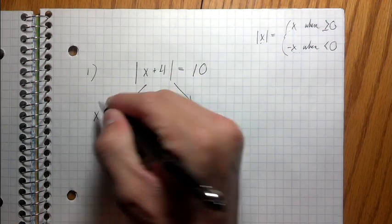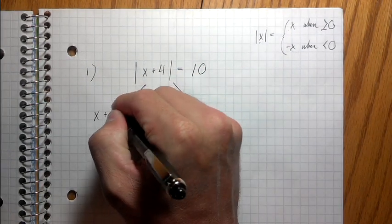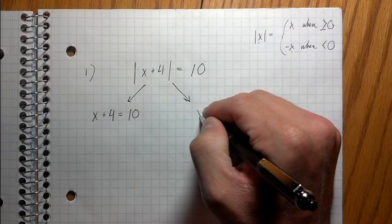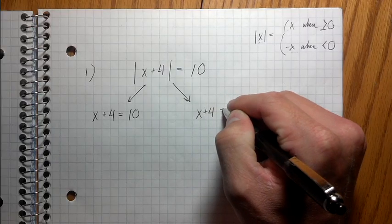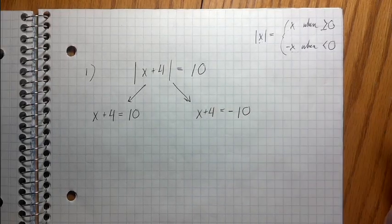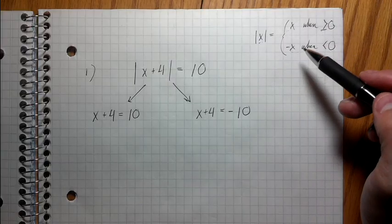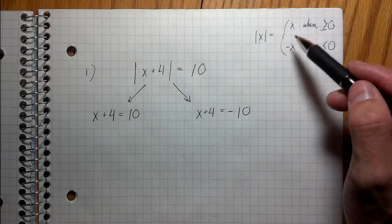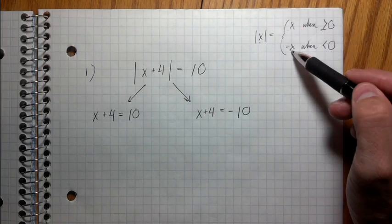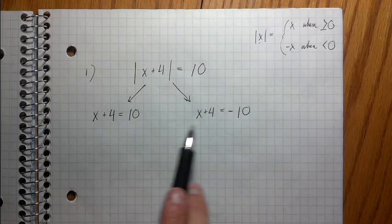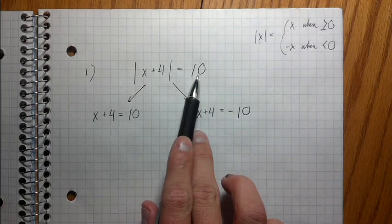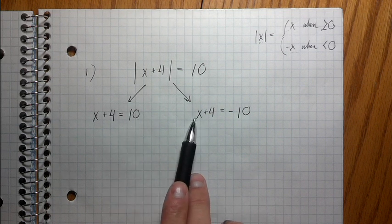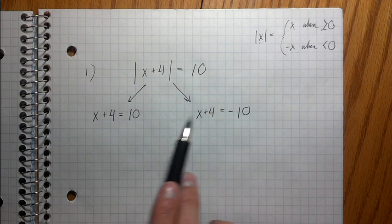So I'm gonna break this into two equations. The first equation is gonna be x plus four equals 10. And the second equation is going to be x plus four equals negative 10. So you don't have to know this whole explanation that I just gave you, but for those of you who like to understand the theoretical basis behind things, this is kind of why. Because it's positive sometimes, negative sometimes. But the bottom line is that when you break apart an absolute value equation to solve it, you just write one equation with the positive version and then one equation that has the negative version.